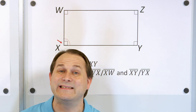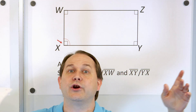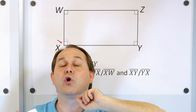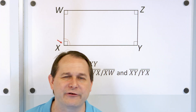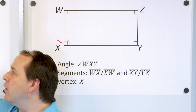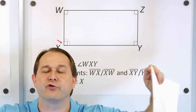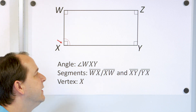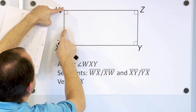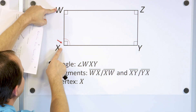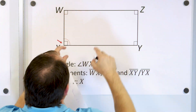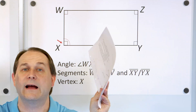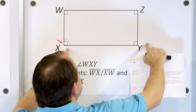Now we have to talk about the concept of a line segment. A line goes on and on forever — in both directions with a double-headed arrow, to the end of the universe; a line never, ever stops. A ray goes forever too, but remember a ray starts at a point. A line segment is when you take a line and cut it — you only have a segment of that line. This is a line segment: it starts at W and ends at X. A segment stops, it does not go forever.